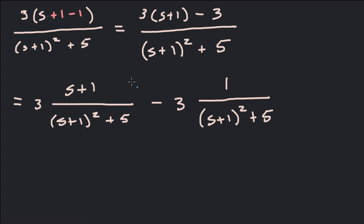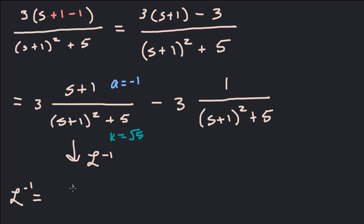Pulling the 3 out front: that'll be 3 times (s plus 1) over (s plus 1) squared plus 5, minus 3 times 1 over (s plus 1) squared plus 5. The first term is a cosine transform. Here a is equal to negative 1 and k is equal to square root of 5. Taking the inverse Laplace gives us 3e to the negative t cosine of square root of 5 times t.